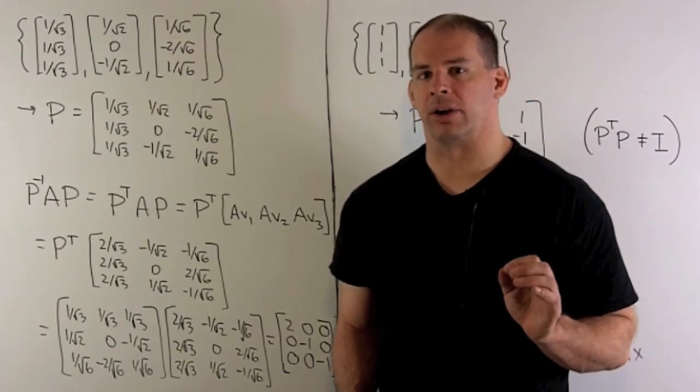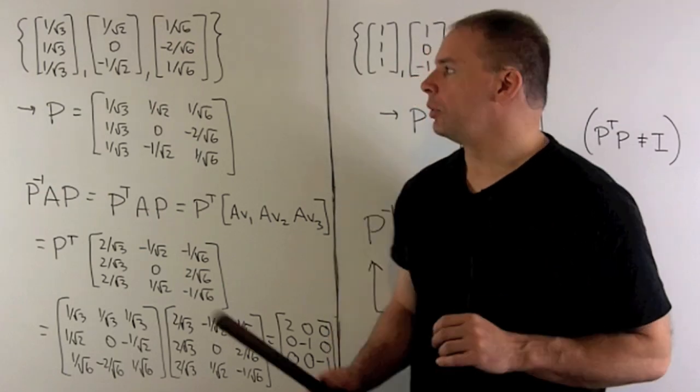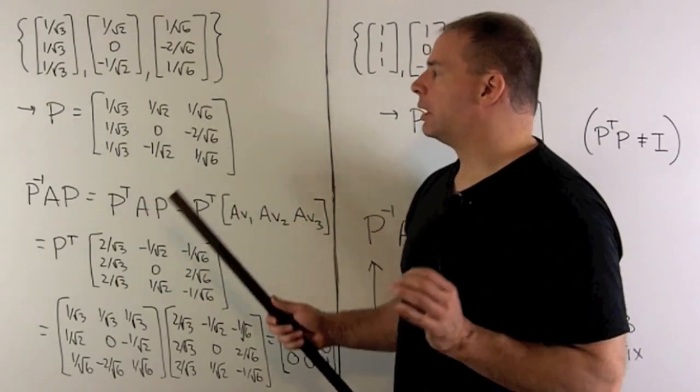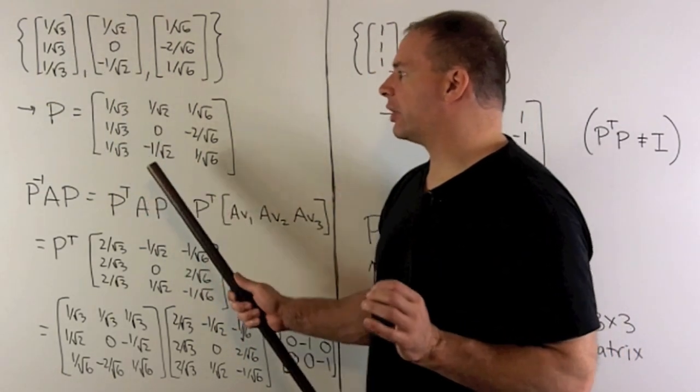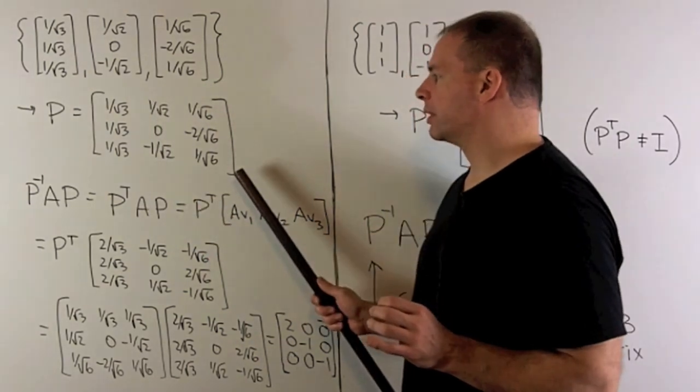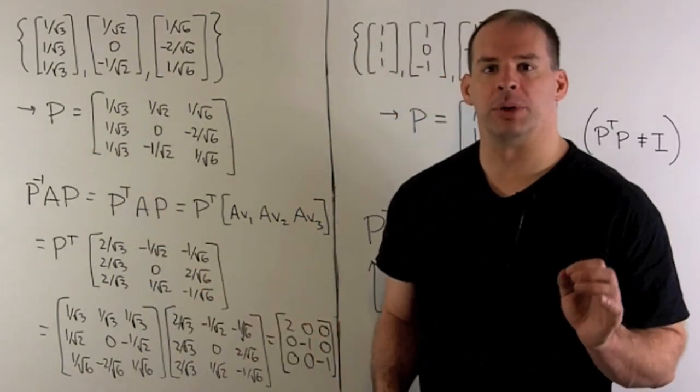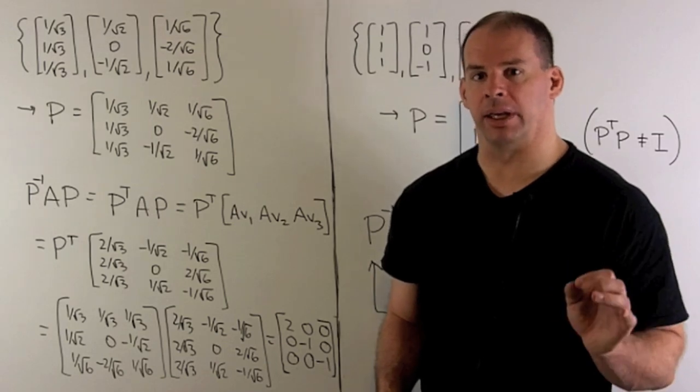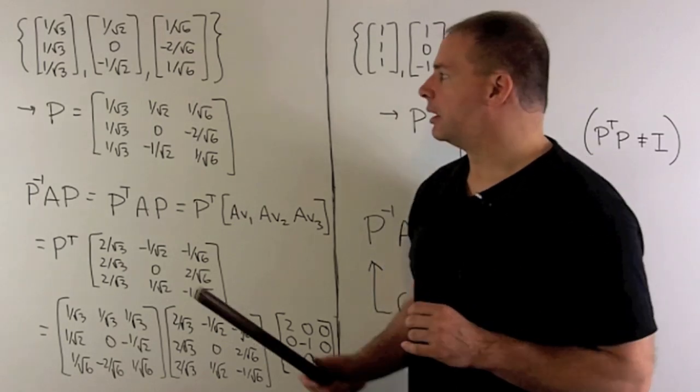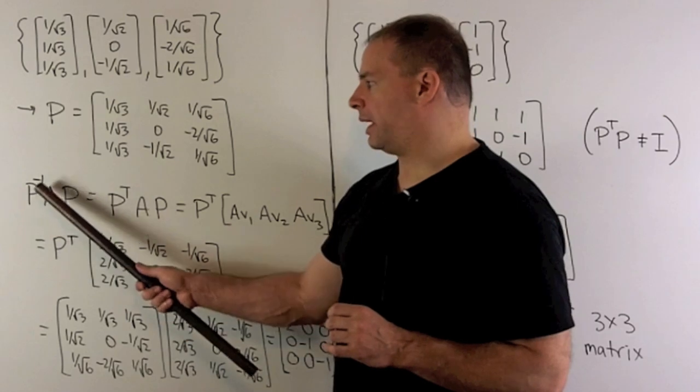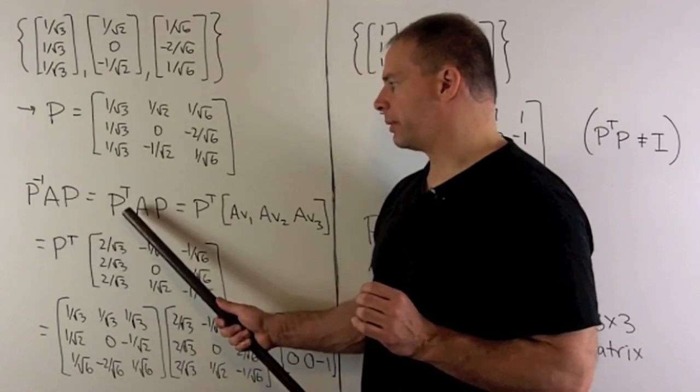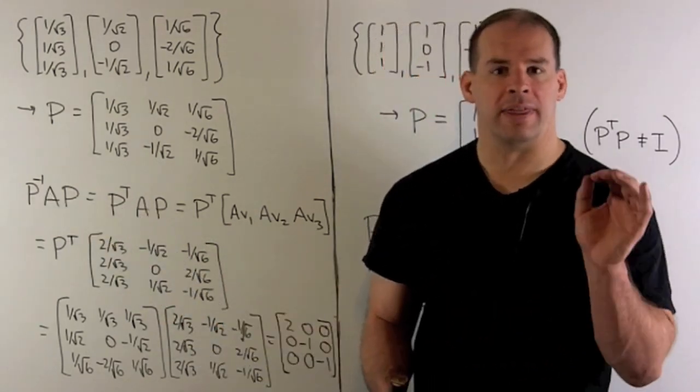Let's put our matrix in diagonal form. We have our orthonormal basis. I'm going to load each basis vector in as a column of our matrix, so we get our basis matrix P. Then we're going to compute P inverse AP. Since P is orthogonal, P inverse is equal to P transpose.